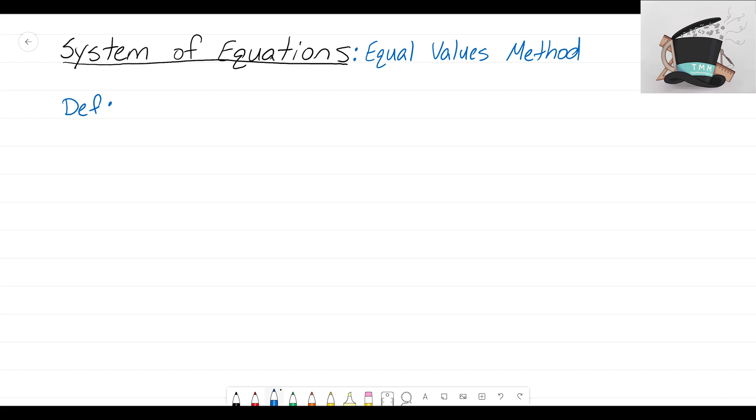Let's come up with a definition. That definition for us is we want to take two expressions that are equal to the same variable and set them equal to each other.